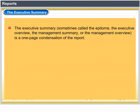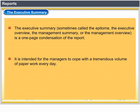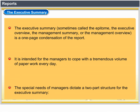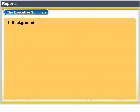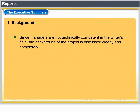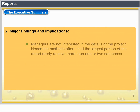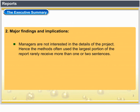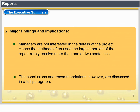The Executive Summary, sometimes called the epitome, executive overview, management summary or management overview, is a one-page condensation of the report intended for managers who have to cope with the tremendous volume of paperwork every day. The special needs of managers dictate a two-part structure: 1. Background — because managers are not technically competent in the writer's field, the background of the project is discussed clearly and completely, and the specific problem is stated explicitly. 2. Major Findings and Implications — managers are not interested in the details of the project, so the methods used rarely receive more than one or two sentences, while the conclusions and recommendations are discussed in a full paragraph.